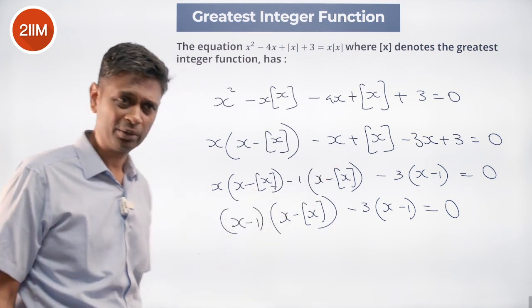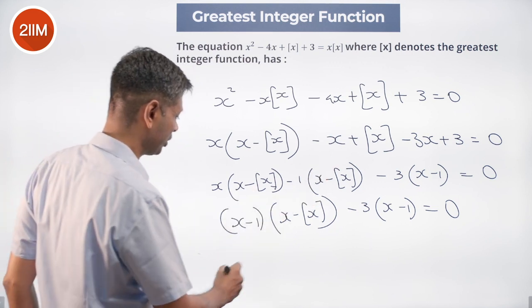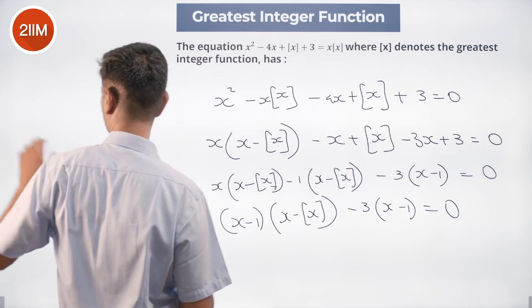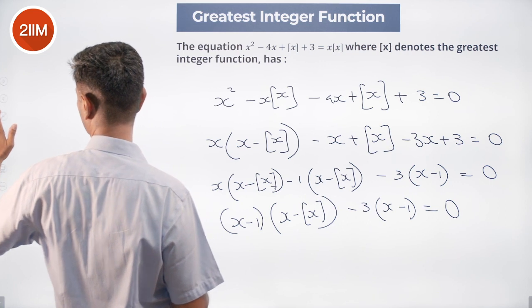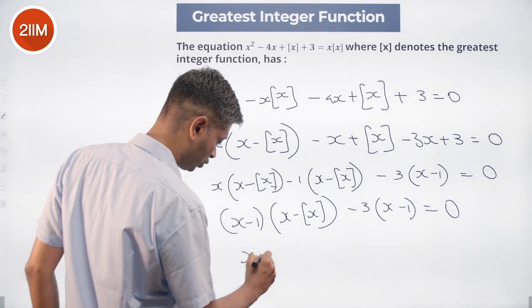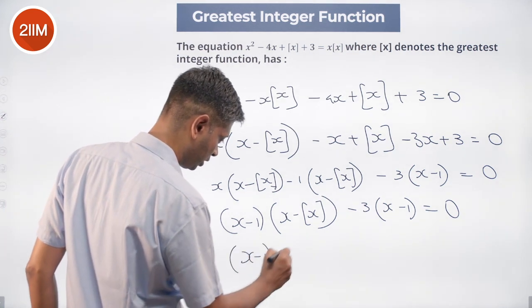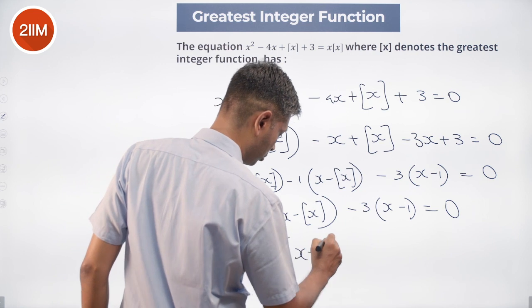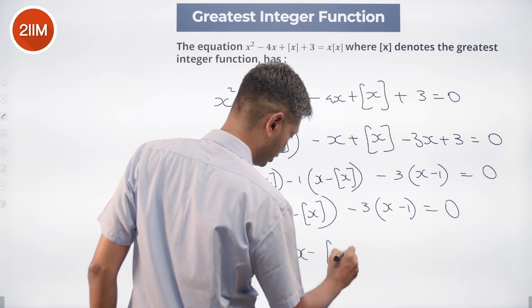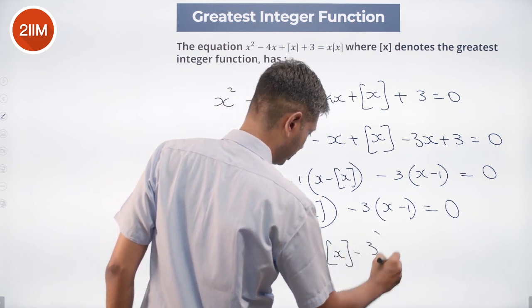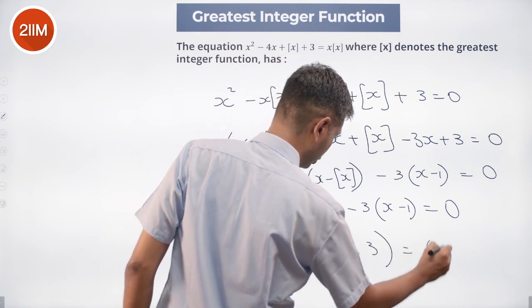Taking out x minus 1 as a common factor, we get: x minus 1 times x minus greatest integer of x minus 3 equals 0. Nicely and brilliantly factorized.